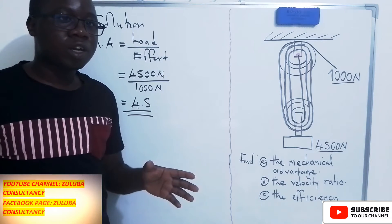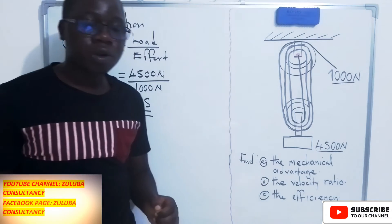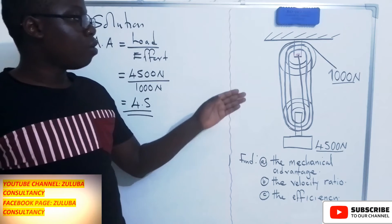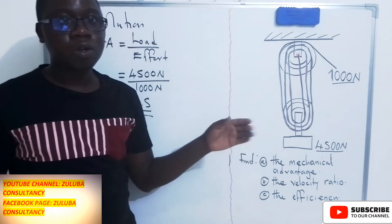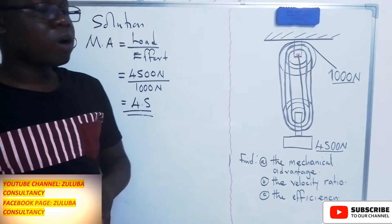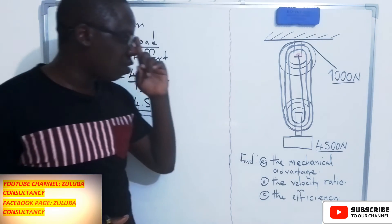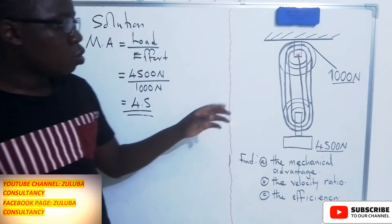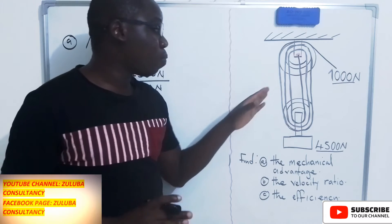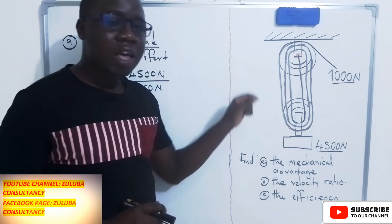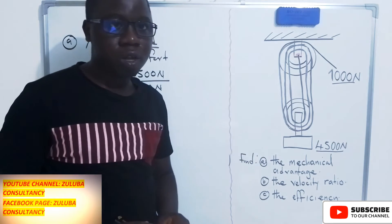The second question is asking us to find the velocity ratio. Remember that this is a pulley system, so when you have been asked to find the velocity ratio, you simply count the lines in the pulley system that are connected to the moving pulleys.